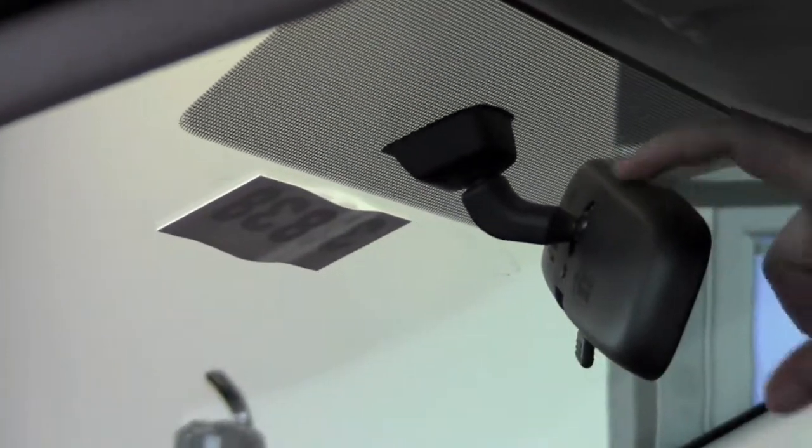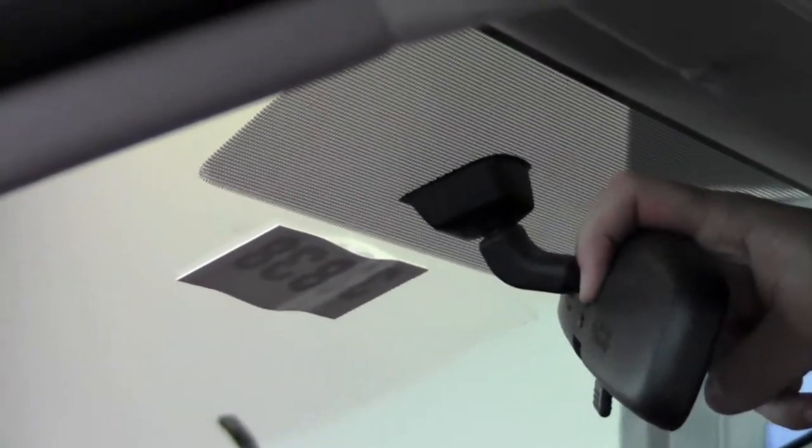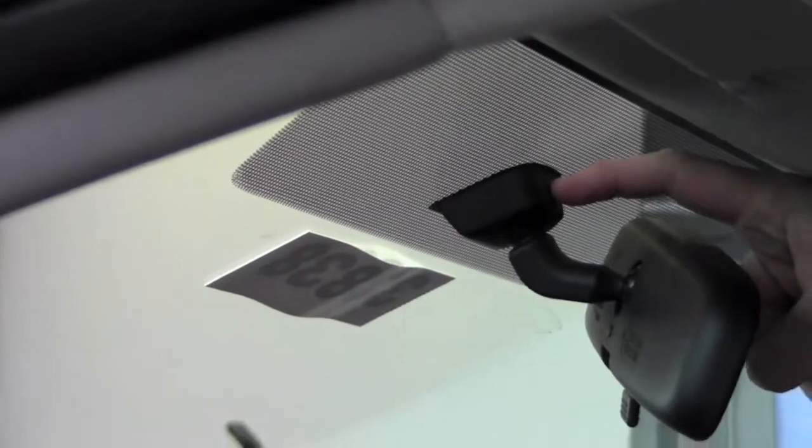There are two pivot points for your rearview mirror. One is located on the mirror itself. The other pivot point is on the window.